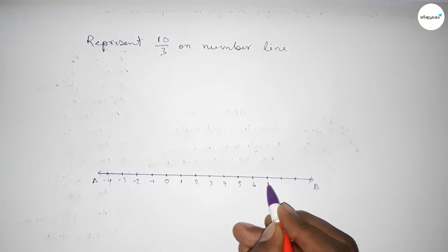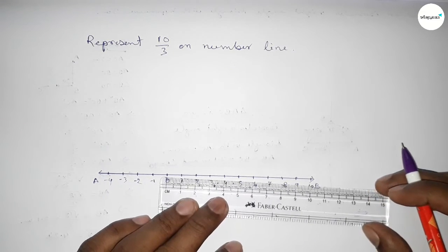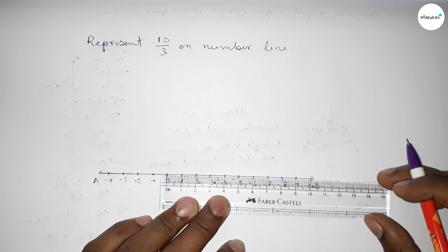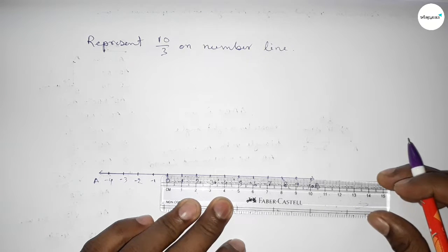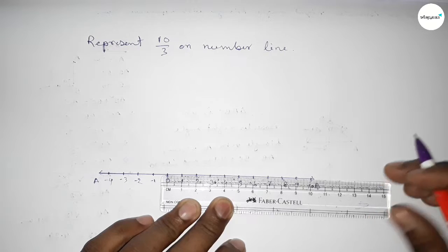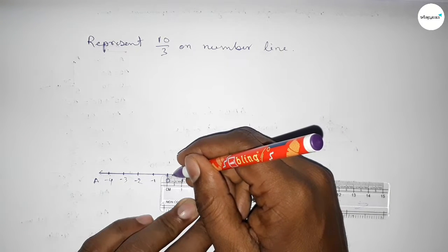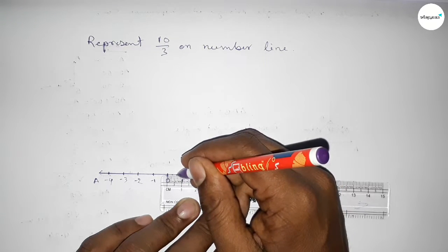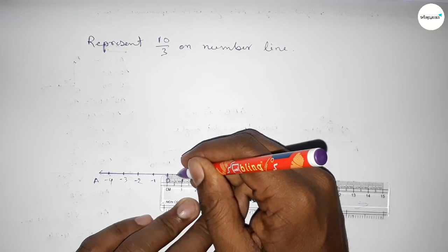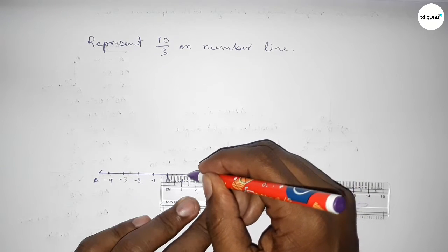Now we divide the distance between any two numbers into three parts. First, dividing the distance between zero and one into three parts approximately — this gives 0.33 approximately and 0.67 approximately. Similarly, divide the distance between one and two into three parts.